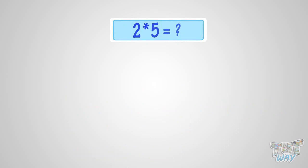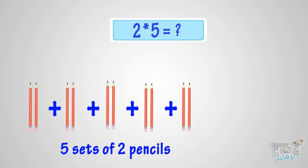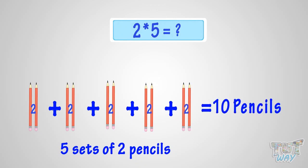What is two multiplied by five? It is the same as five sets of two pencils. Two plus two plus two plus two plus two equals ten. So it is ten pencils. That is, two multiplied by five is ten.